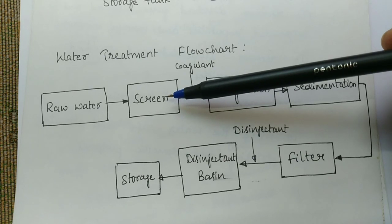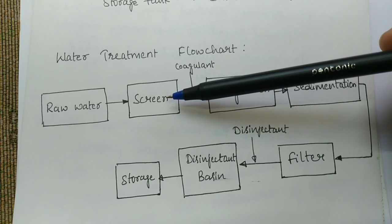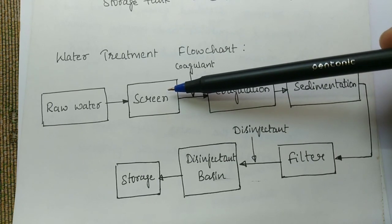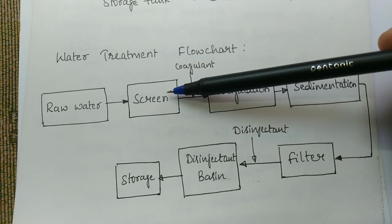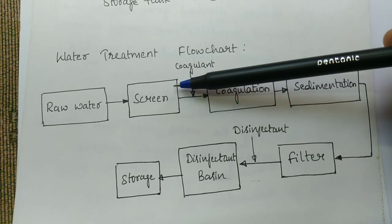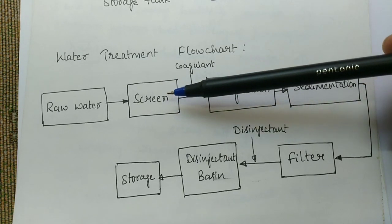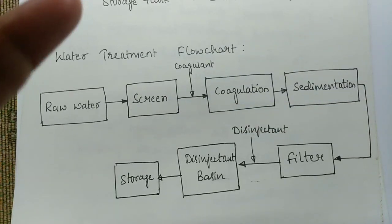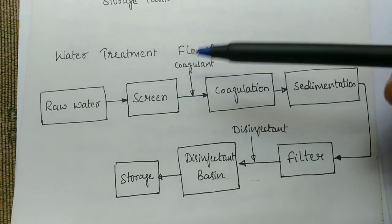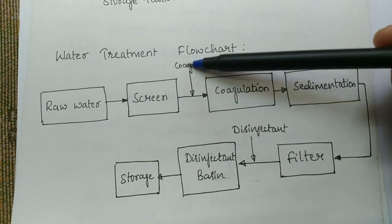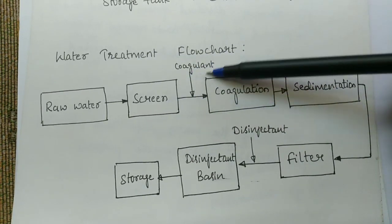Such large particles could cause malfunctioning of pumps and affect the working of various downstream units. For example, they may be cloth rags, pieces of paper, or plastic — all such particles must be removed from the water. After the screen, we add a coagulant — a chemical that is added to the water.